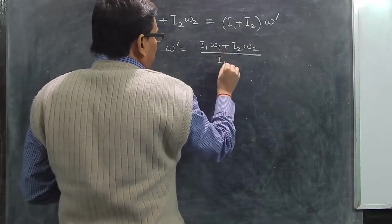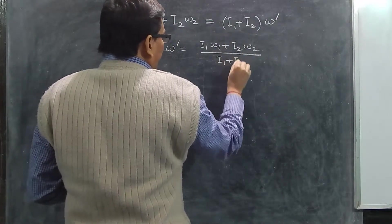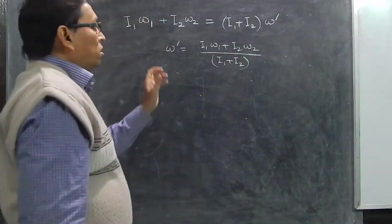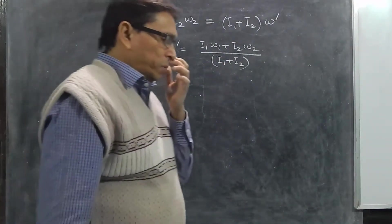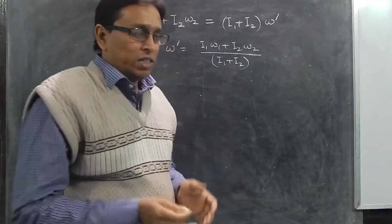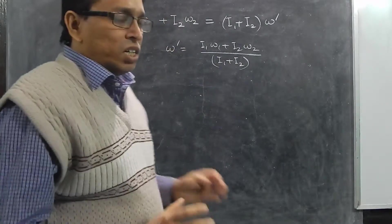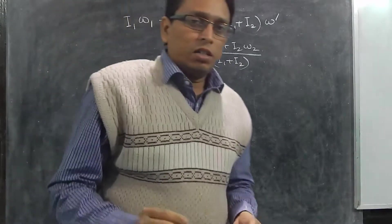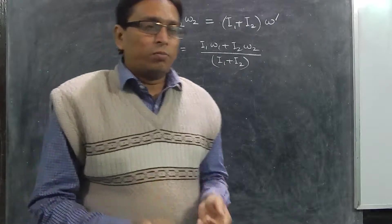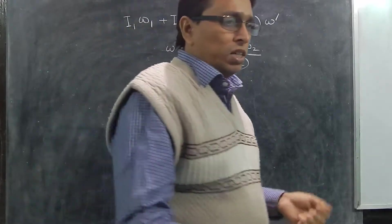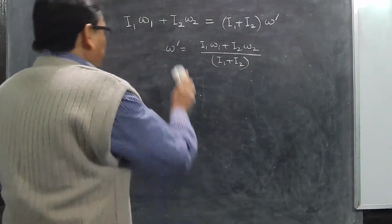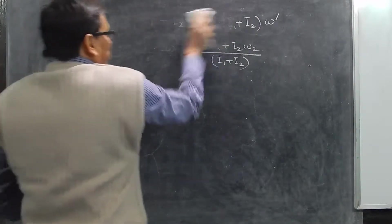We are interested to find ωx. This will be (I1ω1 + I2ω2) divided by (I1 + I2), which gives the final resultant angular momentum. The general problem is a bit more involved, so I will discuss one problem that will clear many of the doubts.